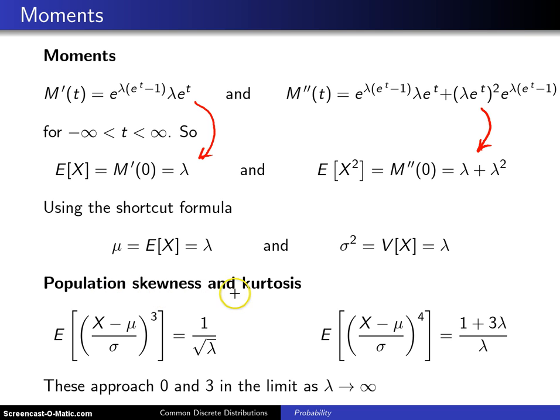Next, the population skewness and kurtosis. Leaving out the details of the derivation, they are 1 over the square root of lambda and 1 plus 3 lambda divided by lambda. In the limit as lambda approaches infinity, these approach zero and 3.